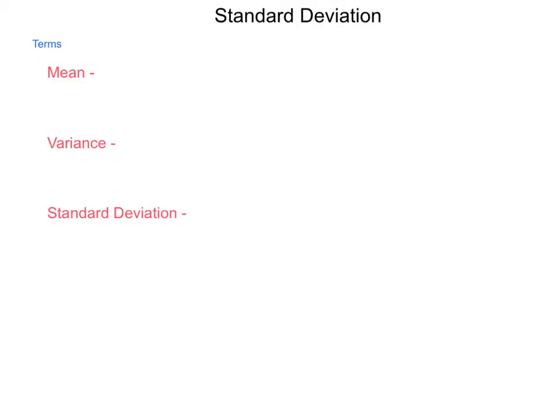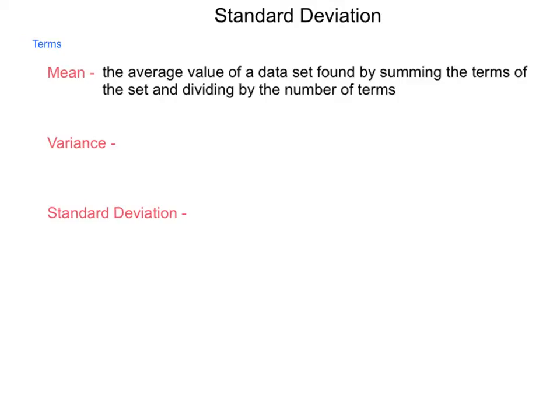So let's start with a couple of terms that are going to be very helpful in this, and the first is mean. Mean is the average value of a data set found by summing the terms of the set and dividing by the number of terms.